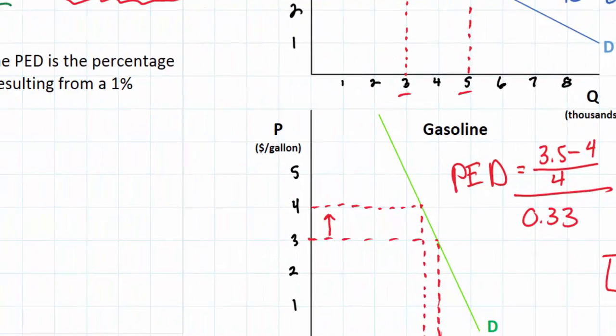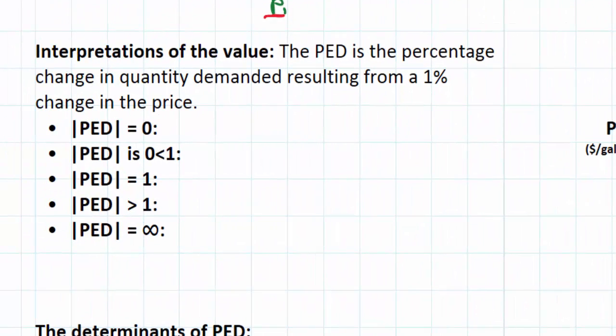So with that in mind we can do some further interpretation of the possible outcomes of our PED calculation over here. Notice that I'm looking at the absolute value of PED when interpreting its value. So we're going to actually drop the negative sign when we interpret the value of PED because what we really care about is what the value tells us, what the number tells us.